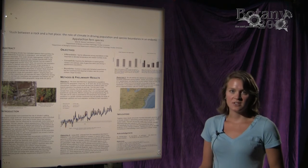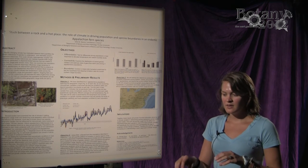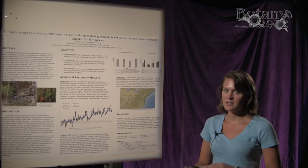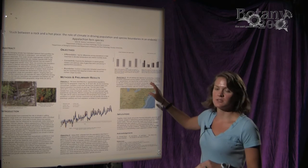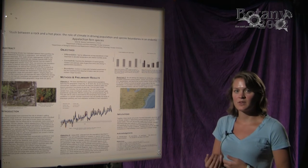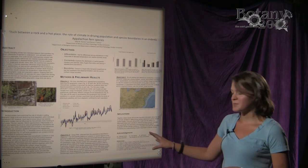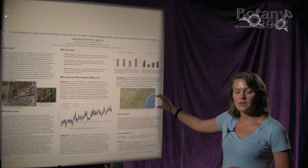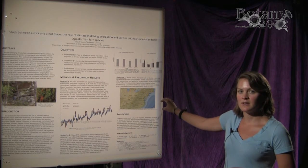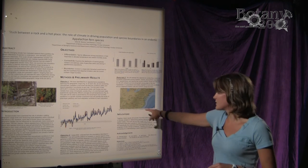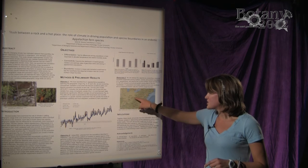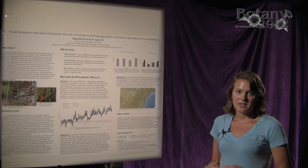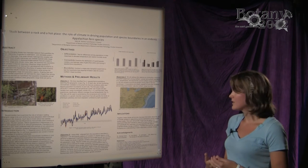Potentially, if the populations are significantly and genetically different, that leads me to this third objective that tests for local adaptation. So if these plants are genetically different and they're only tolerant of the climate of their specific region, like these orange dots represent right here, then that will help us determine if this plant can tolerate climate change.